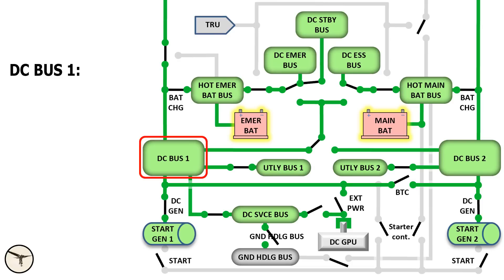DC bus one: display units one and three. That's for the glass cockpit. Automatic pressurization, weather radar.